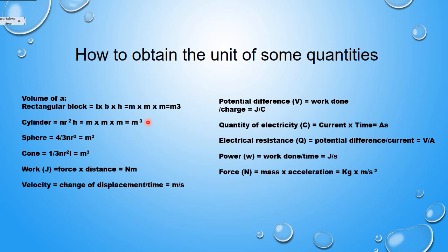Force is mass times acceleration. Mass is measured in kilograms and acceleration in meters per second squared, so force is kilogram-meter per second squared, also expressed as Newton. Area is length times breadth; both are distances in meters, so adding the powers of the two dimensions gives meter squared as the unit for area.